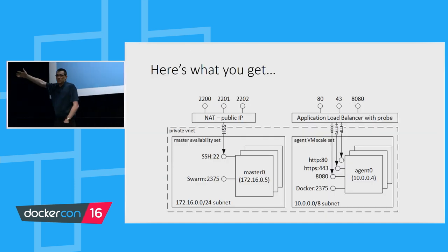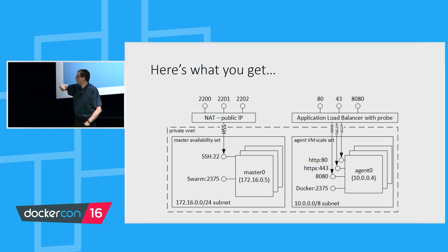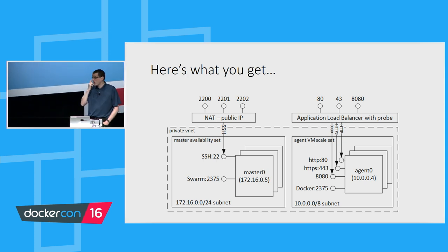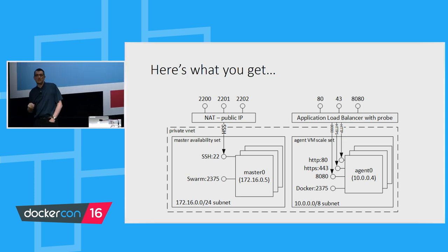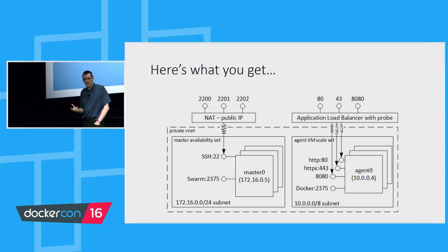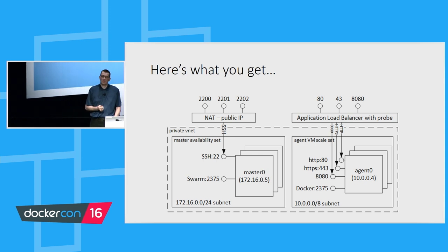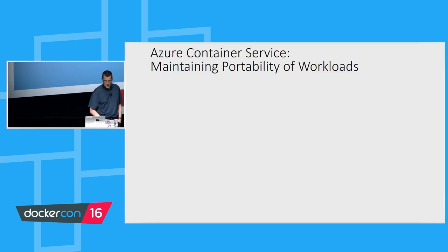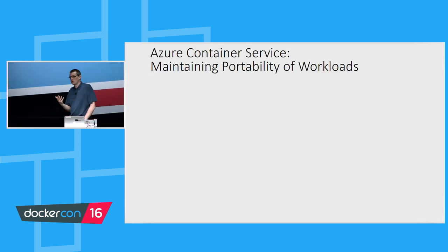What you get is a standard setup: some masters with swarm agents, with the Swarm and Docker engine on there, and some agents with the Docker engine running. We expose those and you communicate. At the moment we communicate via an SSH tunnel. We don't set up TLS right now — that's something done within the Docker ecosystem typically — so that's work in progress. Right now you set up an SSH tunnel and use the standard Docker command line tools across the workload.